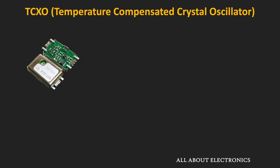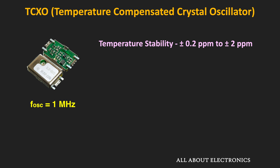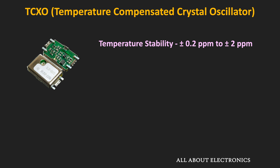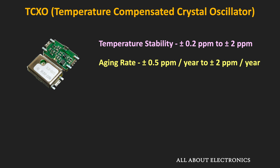One such crystal oscillator is the Temperature Compensated Crystal Oscillator, commonly known as the TCXO. Over an operating temperature range of 0 to 50 degrees Celsius, the temperature stability of such crystal oscillators is in the range of ±0.2 ppm to 2 ppm. For example, for a 1 MHz crystal, the change in frequency over the operating temperature range can be as low as 0.2 Hz or at most 2 Hz. These TCXOs provide much more stability compared to normal crystal oscillators, and their typical aging rate is ±0.5 ppm to 2 ppm per year.